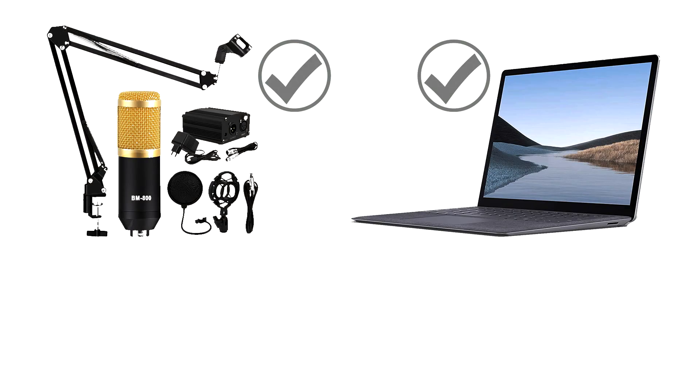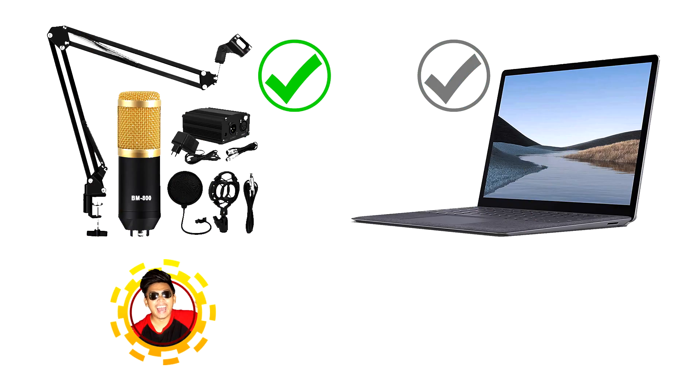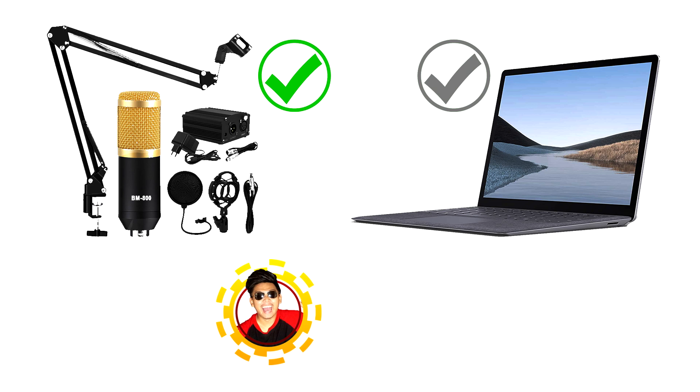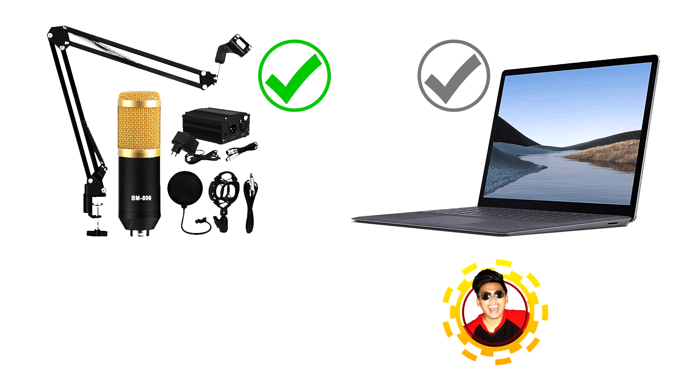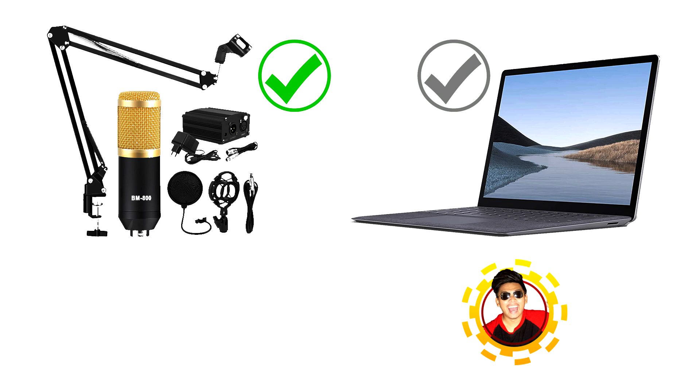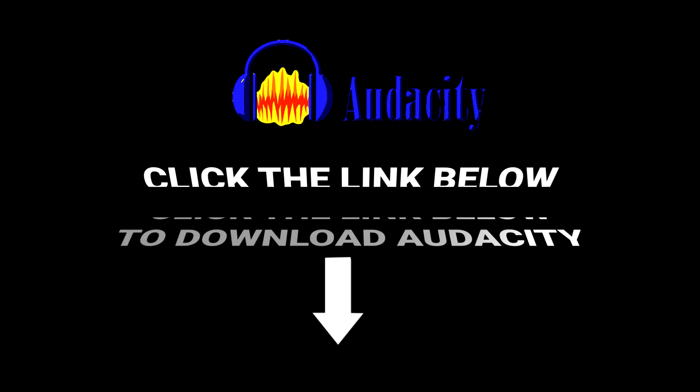So there you go, you're all set now with your connections. Next, we need software where we can record using our BM-800 condenser. You need to install Audacity. There's a link below and it will direct you to the site. It's safe and it's also free.